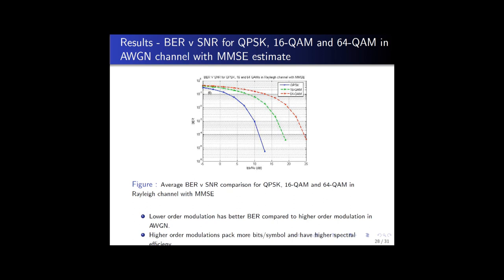The bit error rates are much lower for QPSK. However, higher order modulations pack more symbols and hence they are spectrally more efficient and improve the data rate.